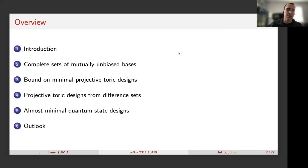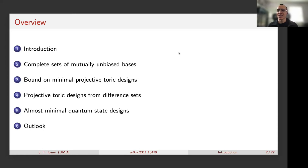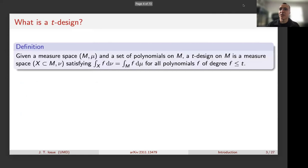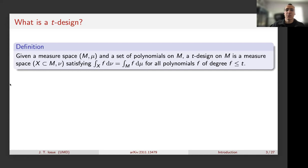Here's the rough overview — it's somewhat disjointed because projective toric designs seem to be related to various things. Let me begin by defining a t-design. This is not quite the standard definition but it's roughly equivalent: given a measure space and a set of polynomials, a t-design is another measure space which exactly integrates polynomials up to degree t.